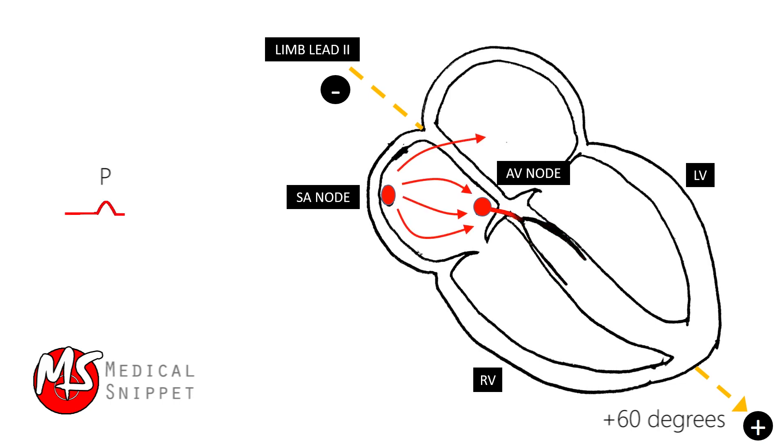Then the impulse travels slowly through the AV node, then rapidly through the bundle of His, then the bundle branches.